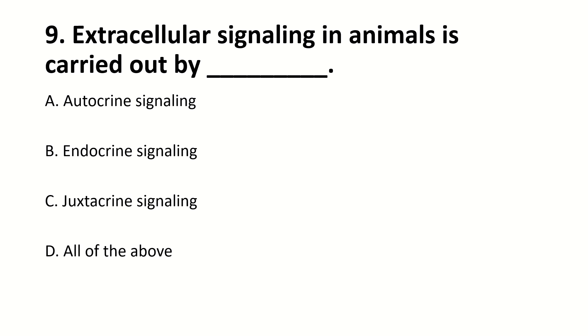Extracellular signaling in animals is carried out by dash. Right answer is D — all of the above.